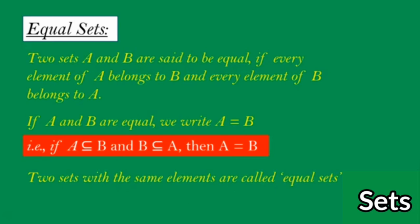We say that two sets are equal. When A is equal to B, we check two conditions: A should be a subset of B, and at the same time B should be a subset of A. This is possible only when both sets are equal. The order of elements in a set doesn't matter — set of {1, 2, 3} and set of {3, 1, 2} are equal.